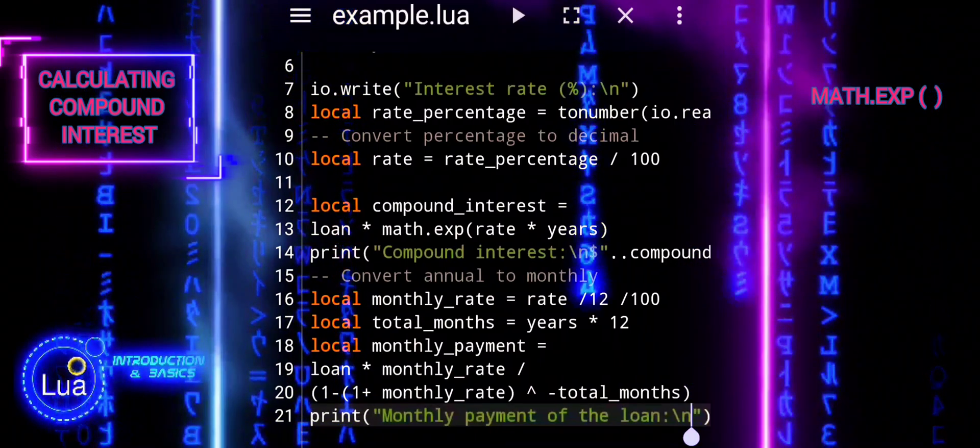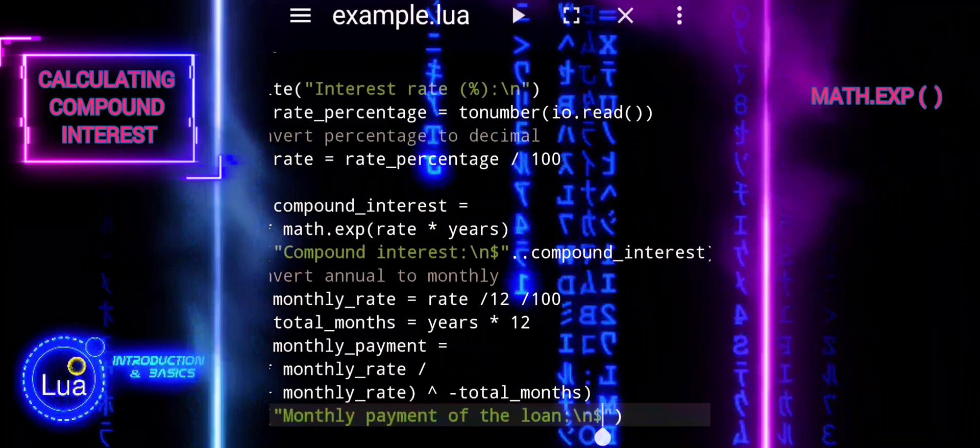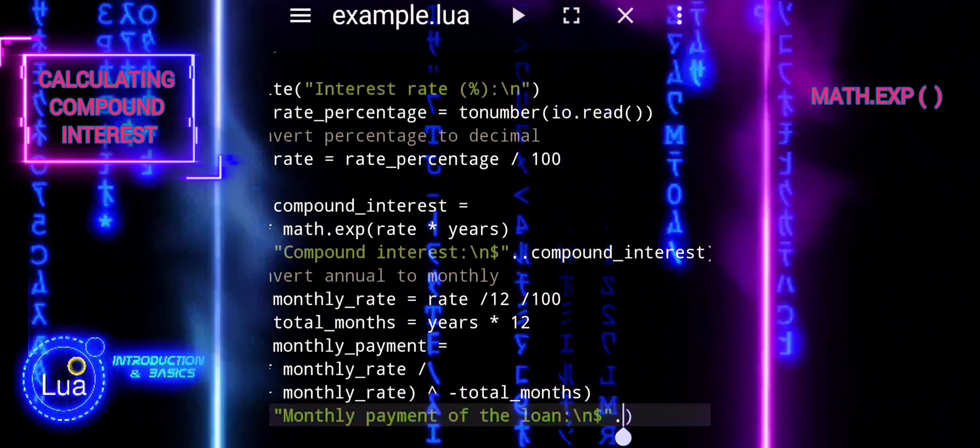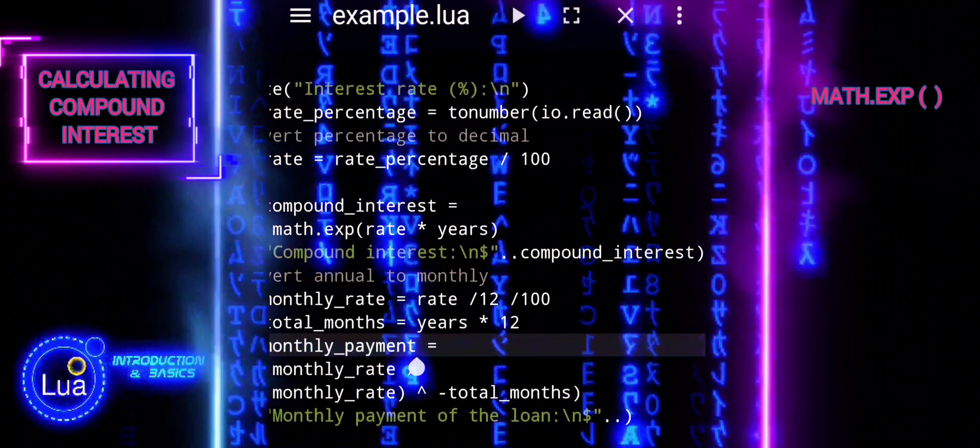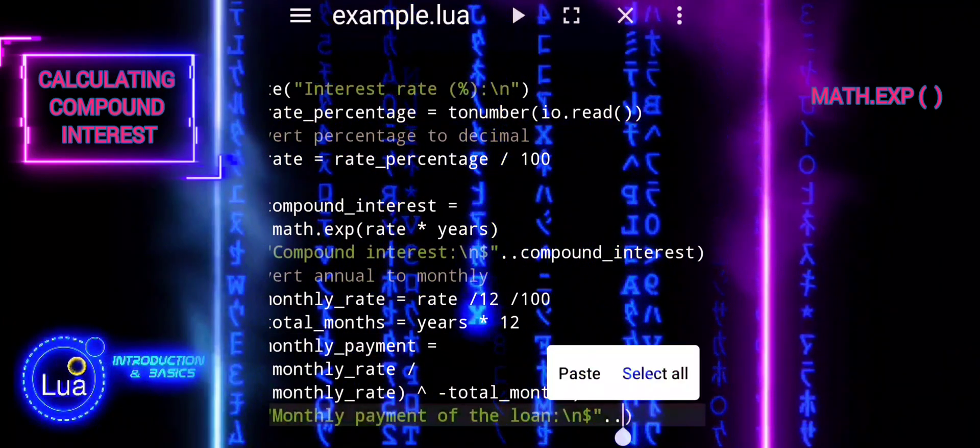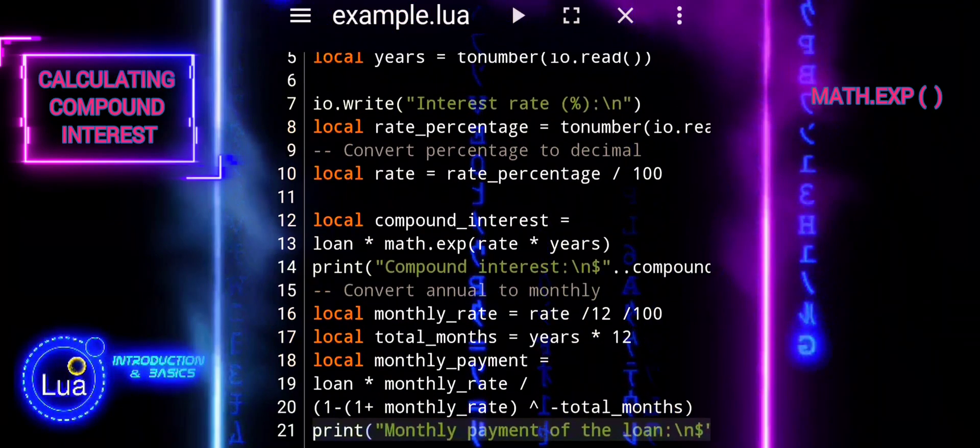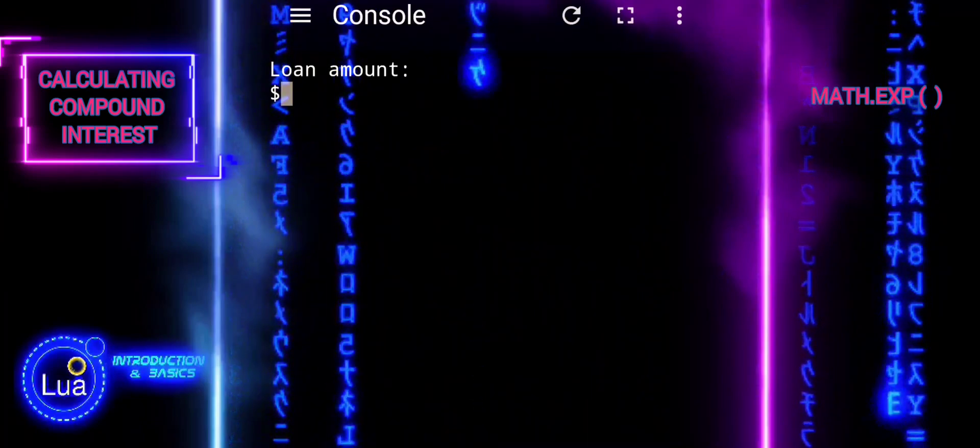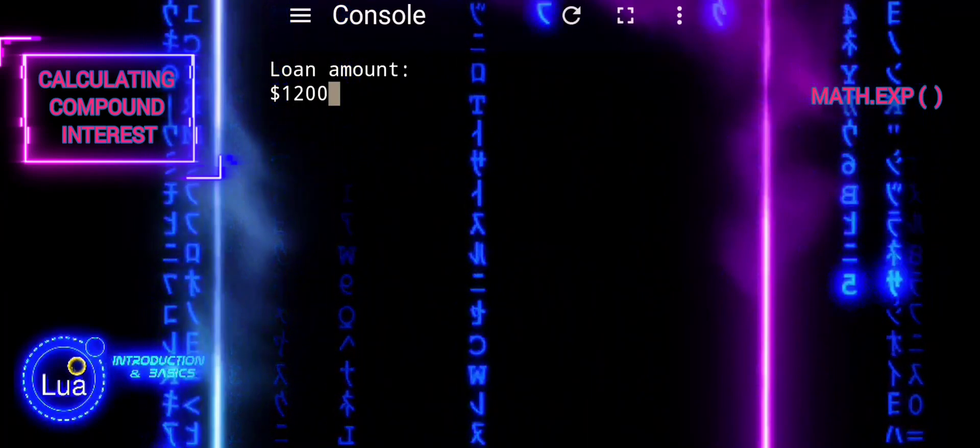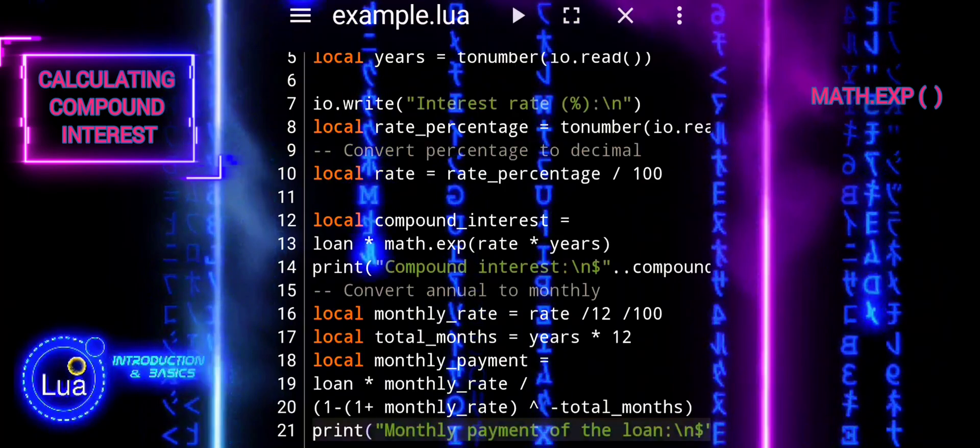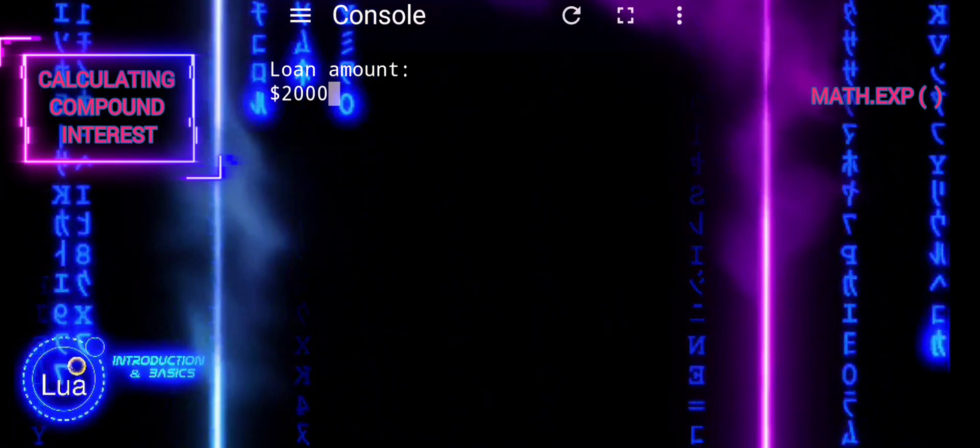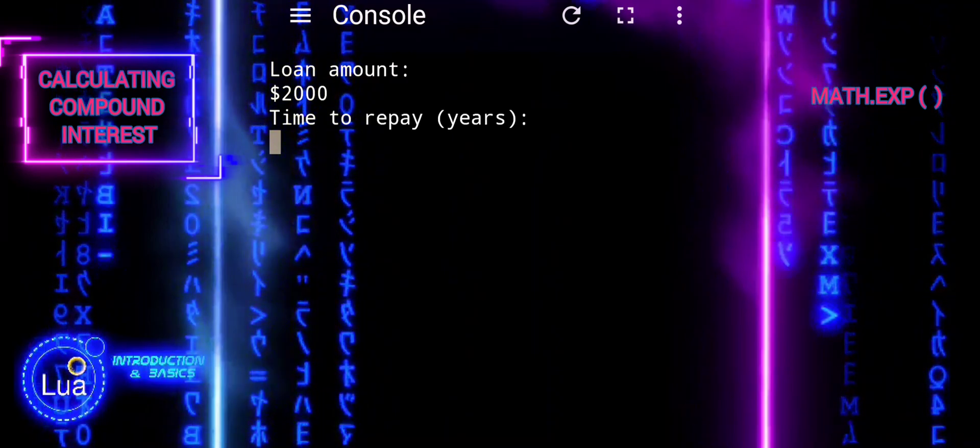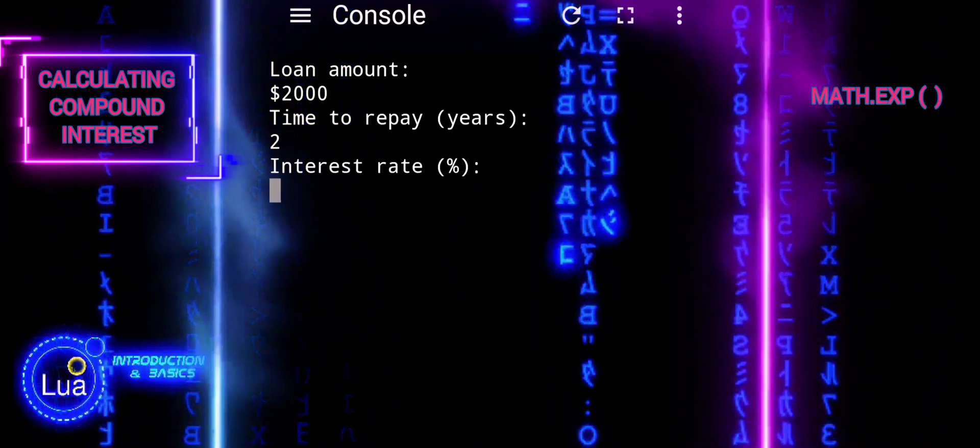This tutorial has demonstrated the process of calculating compound interest and monthly loan payments using Lua programming. By leveraging the MathExp function for exponentiation, we were able to accurately compute compound interest based on user input for loan amount, duration, and interest rate. Additionally, we utilized mathematical formulas to convert annual interest rates to monthly rates and determine fixed monthly payments for amortizing loans.